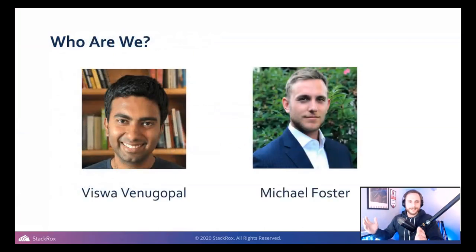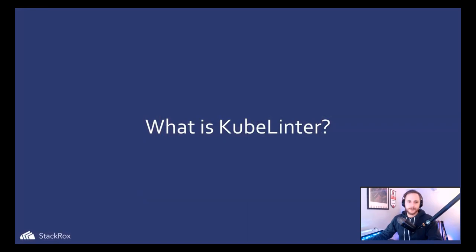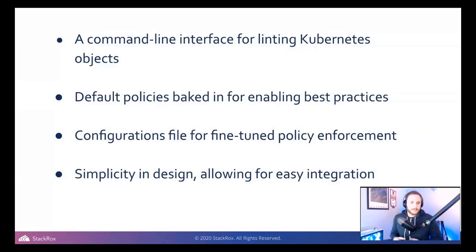We already introduced ourselves — that's Vishwa and I'm Michael. I'll send some links at the end so if you want to contact us or learn more about KubeLinter, we'll be happy to talk. So what is KubeLinter? It's a CLI — a command line interface — for linting Kubernetes objects. These Kubernetes YAML files can be in the form of Helm charts or just regular YAML files.